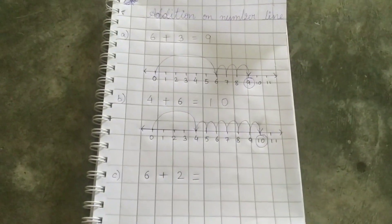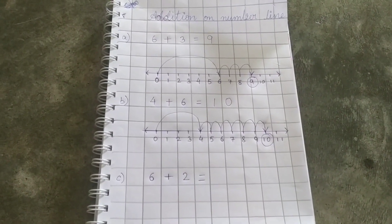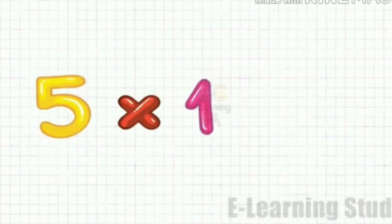So let's do the revision on table of 5. So children let's revise the table of 5. 5 once a 5.